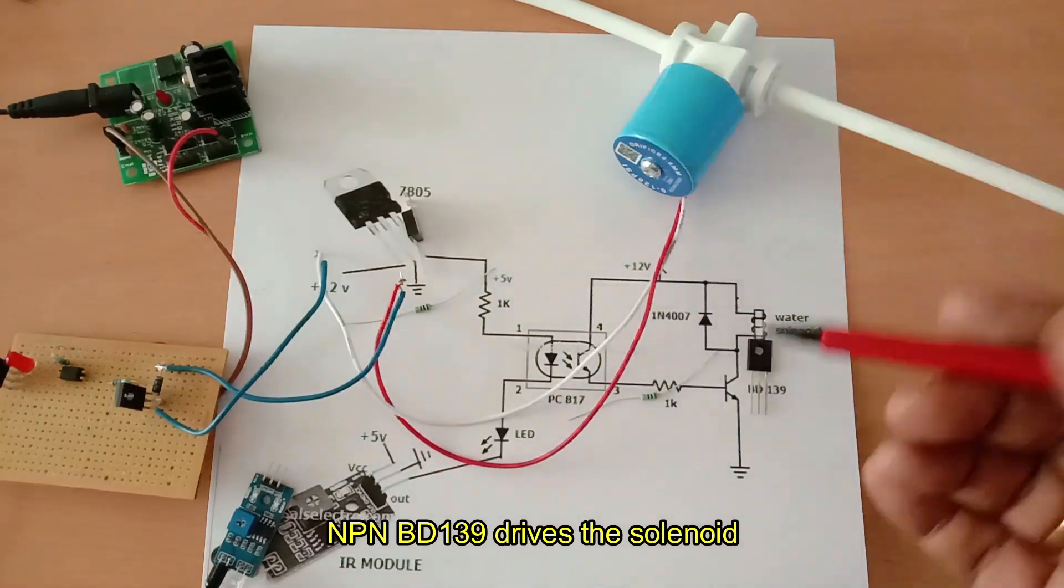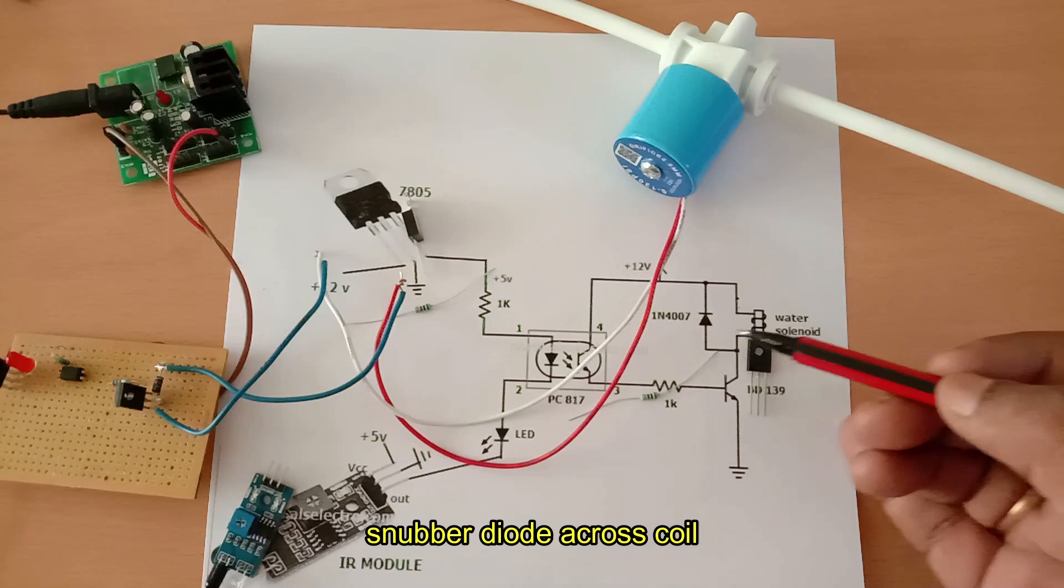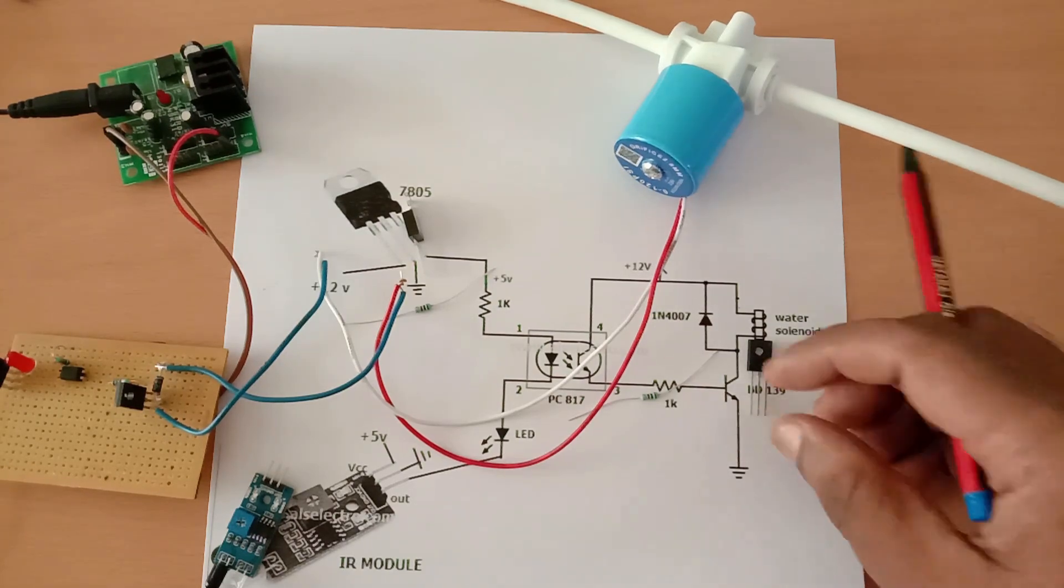The transistor used here is NPN BD139, which has 1.5 amps driving capacity. A separate 12-volt power source is required for this circuit.